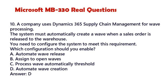Question 10. A company uses Dynamics 365 Supply Chain Management for Wave Processing. The system must automatically create a wave when a sales order is released to the warehouse. You need to configure the system to meet this requirement. Which configuration should you enable? A. Automate Wave Release. B. Assign to Open Waves. C. Process Wave Automatically Threshold. D. Automate Wave Creation. Answer: D.